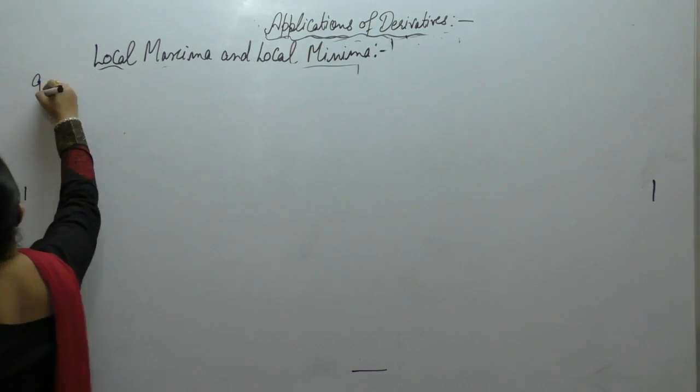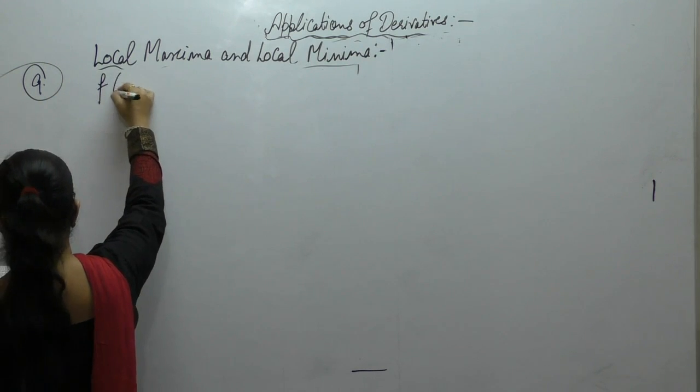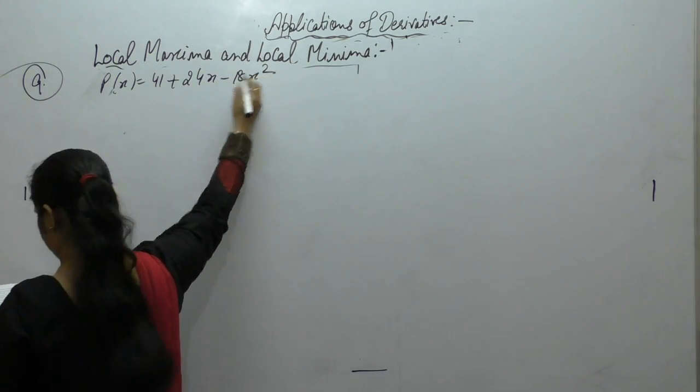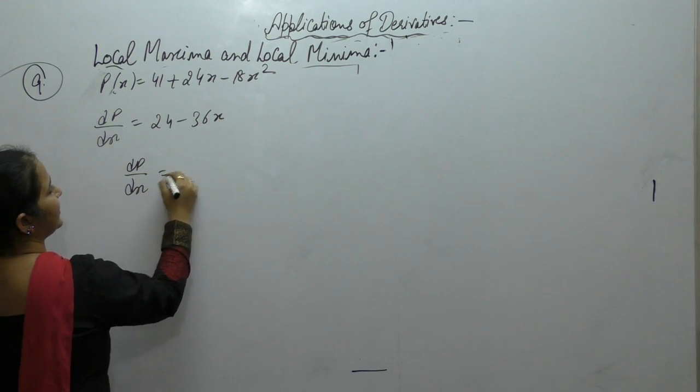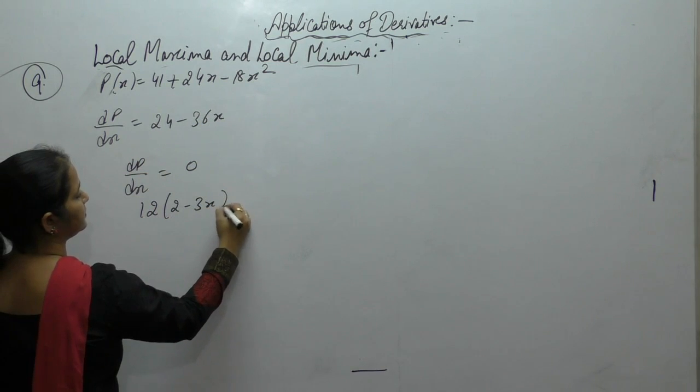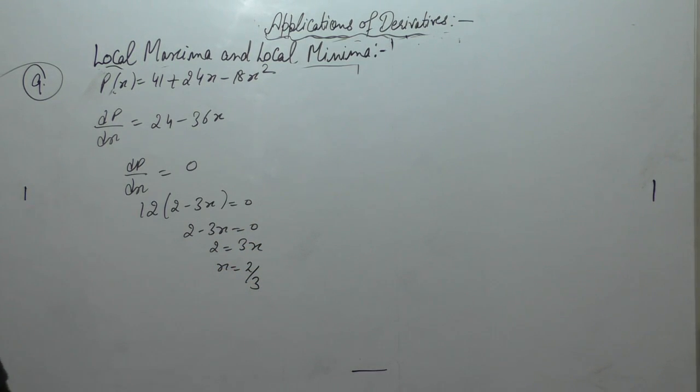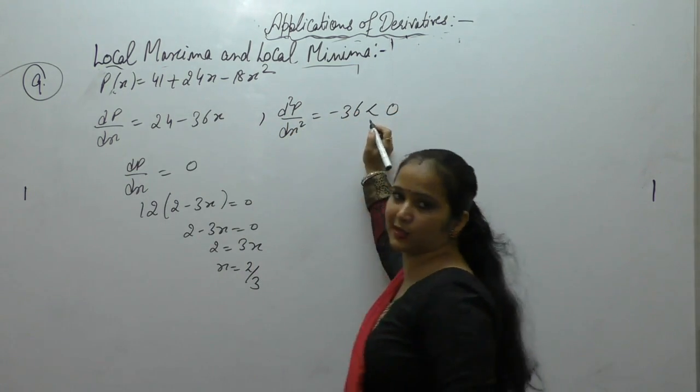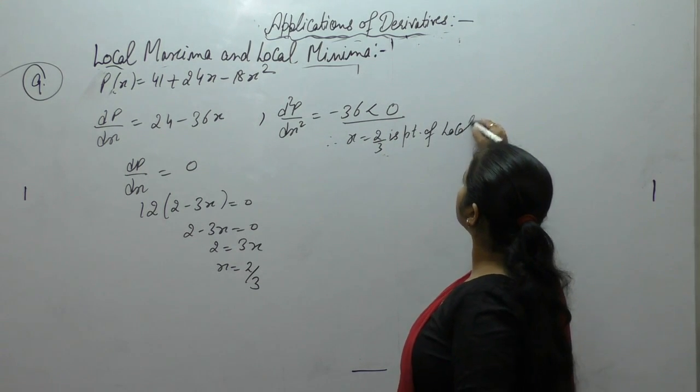Now next one. Find the maximum profit that a company can make if the profit function is given as x as 41 plus 24x minus 18x square. Find its derivative: 24 minus 36x. First derivative equals to 0. So we get x as 2 by 3. x is 2 by 3. Find the second derivative now. Second derivative is minus 36, that is less than 0. Second derivative is less than 0, therefore this is point of local maxima.